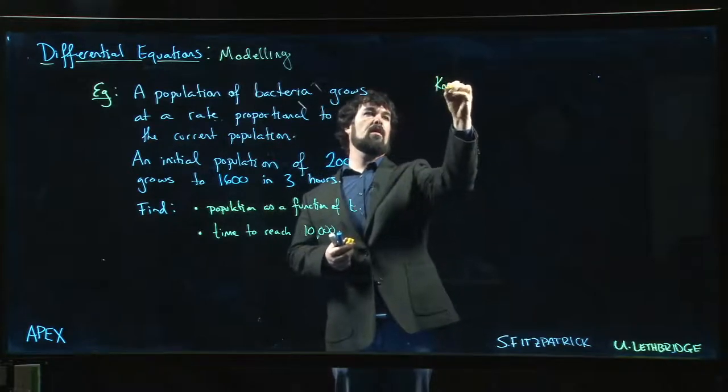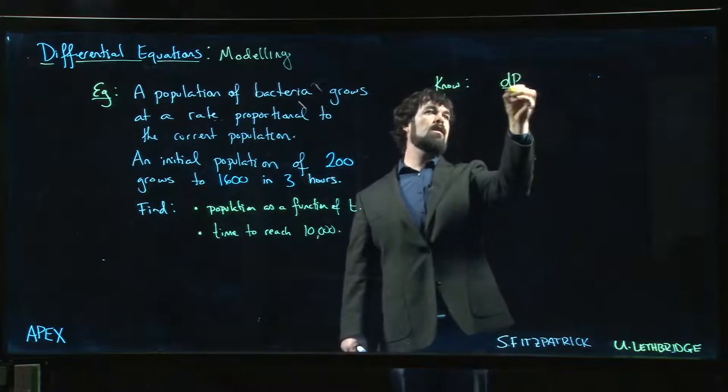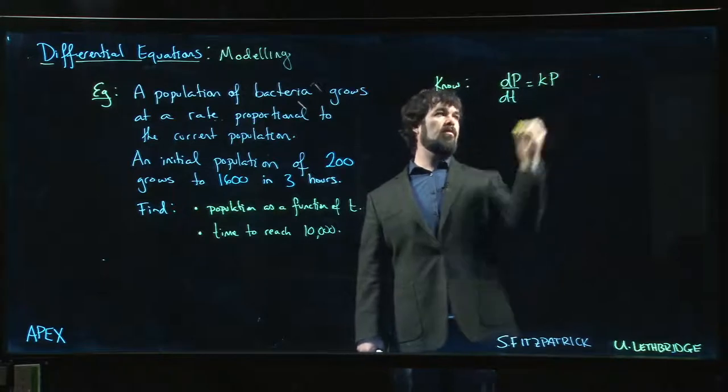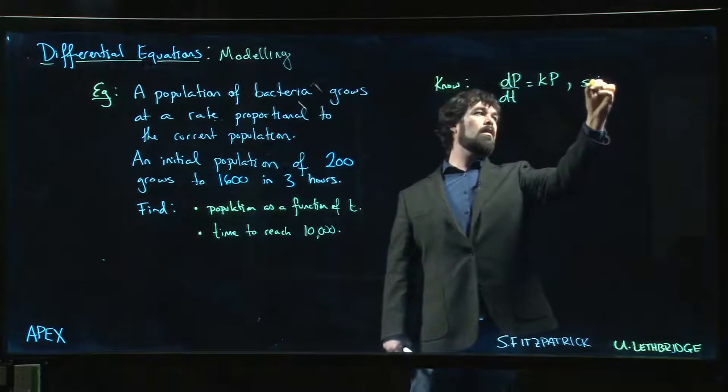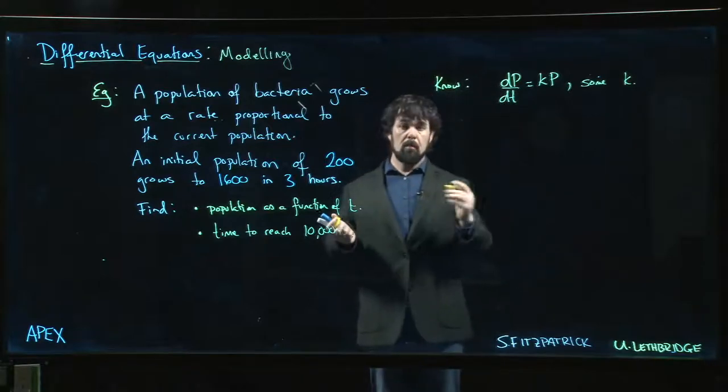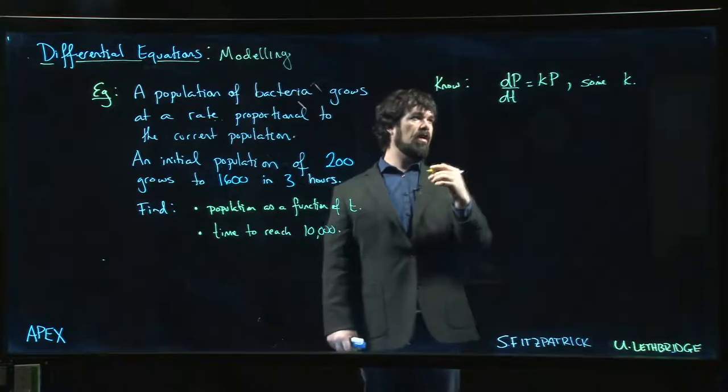We know that our differential equation looks like this: dp/dt is equal to k times p for some value k. Trouble is we don't actually know what k is. You can treat this as a separable equation or linear if you want, but separable is probably going to be easier.